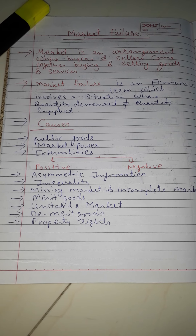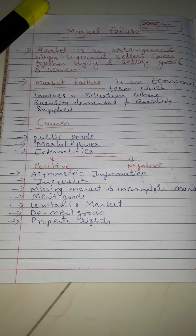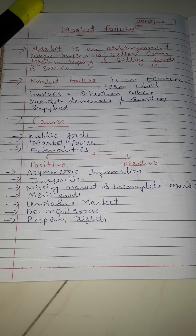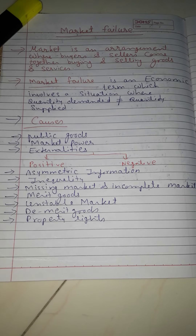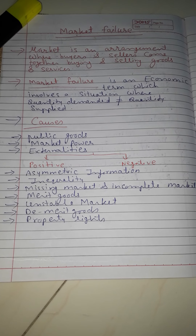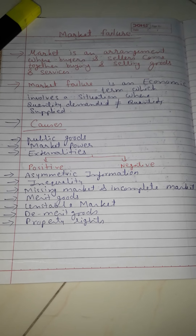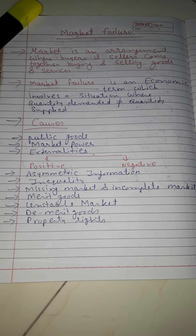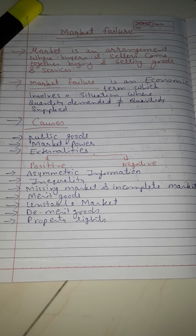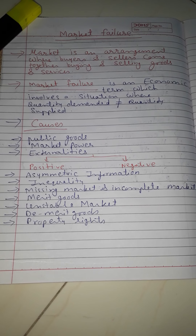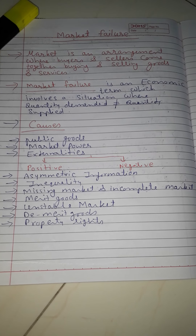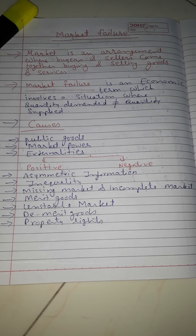Public goods are a special type of goods. They are provided by the government and each and every consumer can consume them whether they have paid tax or not, because they are available free of cost. Examples include street lights, defense, and education.